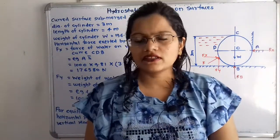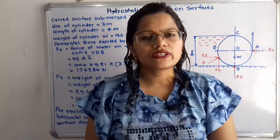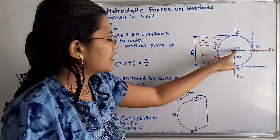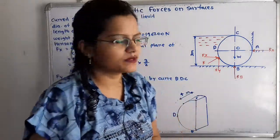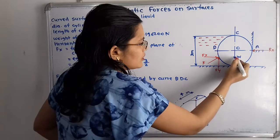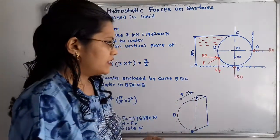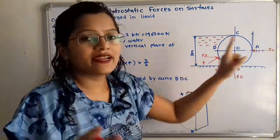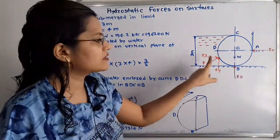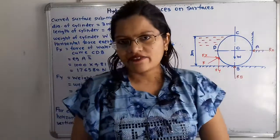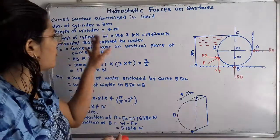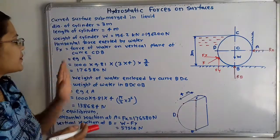The weight of the cylinder is also given. Weight always acts in the vertically downward direction from the center of gravity of the cylinder. We show this weight W acting downward. To find RA and RB, we first need to find the values of FX and FY. So we will first move to the calculation of FX.